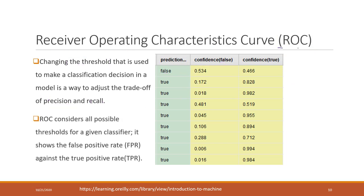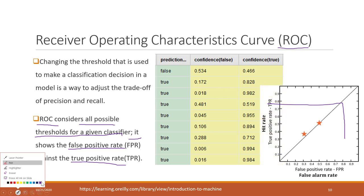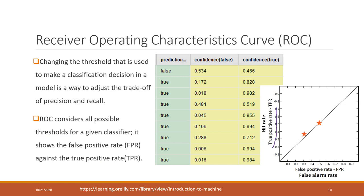So how do we get the ROC curve? ROC considers all possible thresholds for a given classifier and calculates the false positive rate and the true positive rate. We plot the true positive rate on the Y-axis and the false positive rate on the X-axis. For example, using a threshold of 0.1, we can identify a corresponding false positive rate and true positive rate, marking that as a point on the chart.